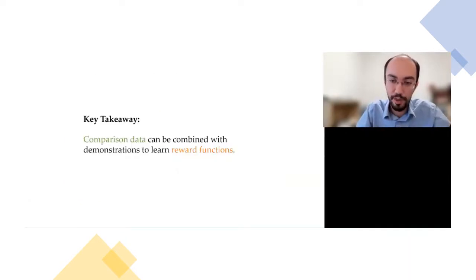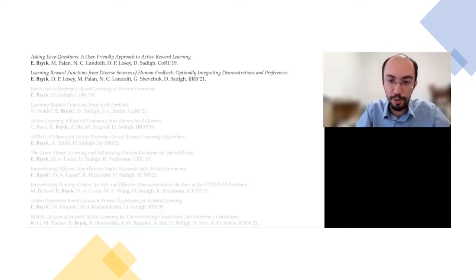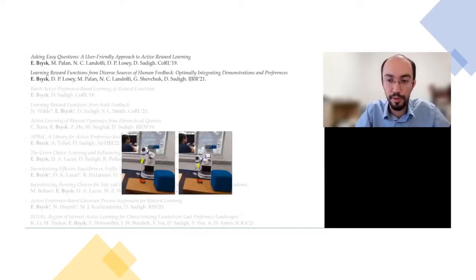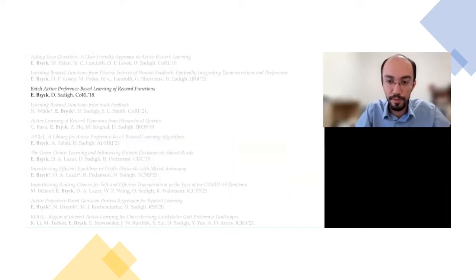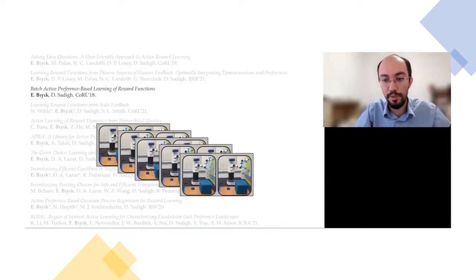With that, we now know how to learn objectives using demonstrations and comparisons. To give an overview of different possibilities in learning from comparisons, I'll briefly describe our works in this domain. First, the robot can decide the comparison questions it wants to ask, so we developed various active learning techniques to optimize these questions for higher data efficiency. However, one issue with active learning is that optimizing each and every query is usually very slow and not parallelizable, so we also worked on batch active learning, optimizing a batch of queries at the same time.